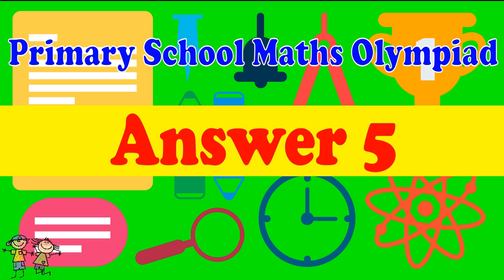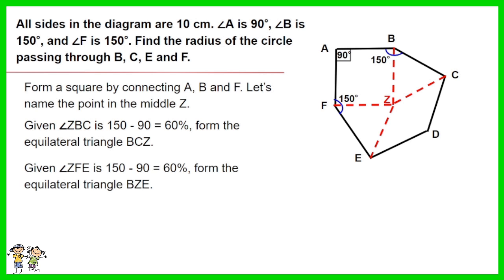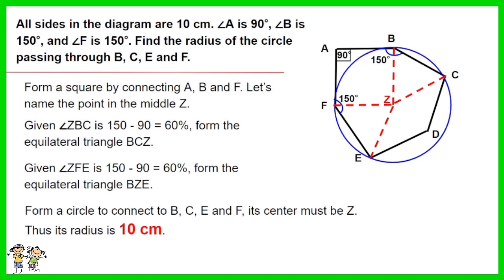Answer for question 5: Form a square by connecting A, B, and F. Let's name the point in the middle Z. Given angle ZBC is 150 minus 90 equals 60 degrees, thus form the equilateral triangle BCZ. Given angle ZFE is 150 minus 90 equals 60 degrees, thus form the equilateral triangle BZE. Form a circle to connect B, C, E, and F. Its center must be Z. Thus its radius is 10 centimeters.